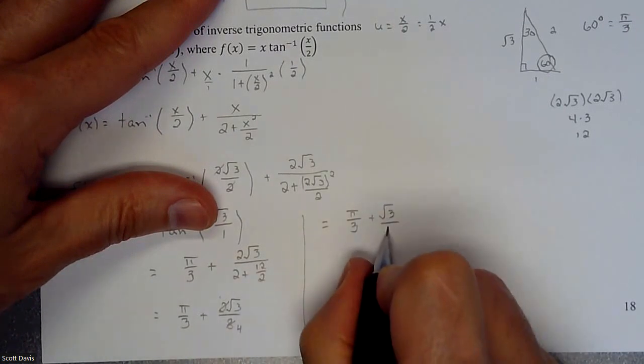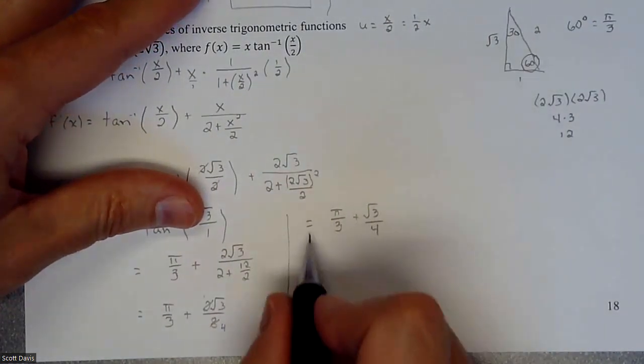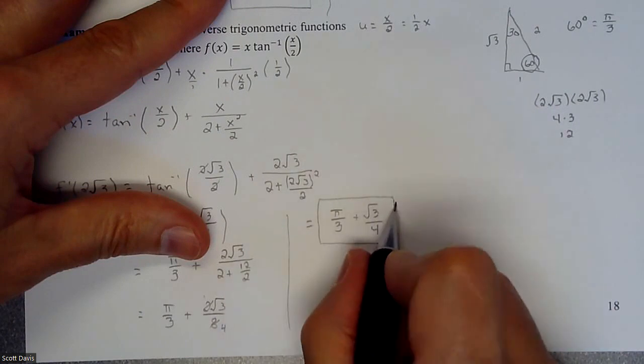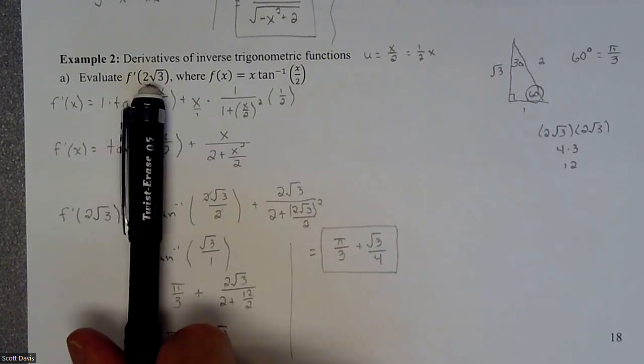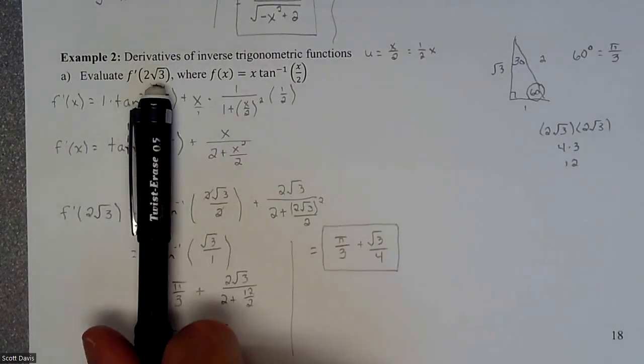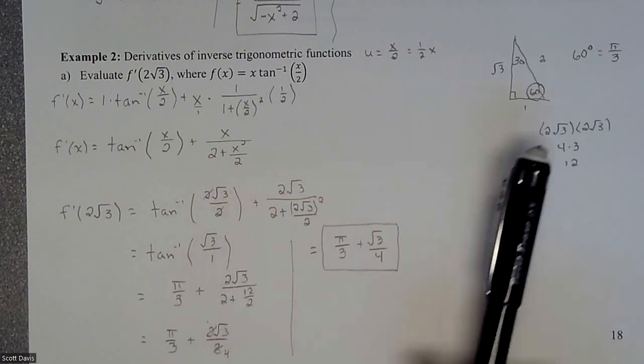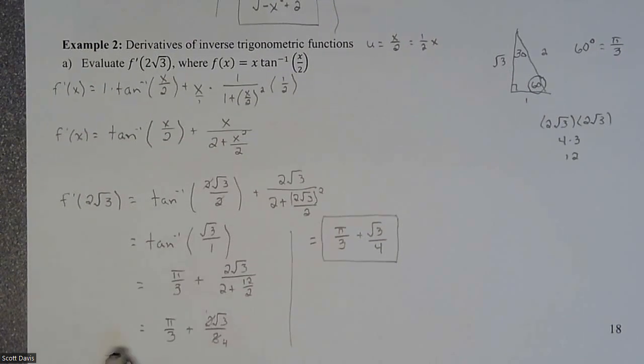Right, we're going to leave it like that, we could find common denominators to combine that fraction, but I don't think that's necessary. So, all right, so that was us finding the slope of this function at a particular point, we found the derivative first, and then we plugged in our value, because we had a trig, we had to do a little side work for our trig. That's what our answer is.